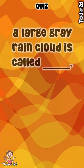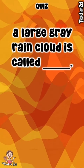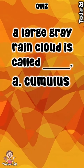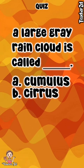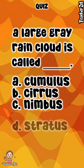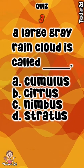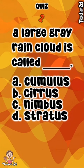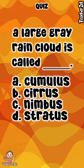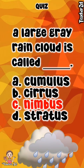A large gray rain cloud is called blank. A. Cumulus. B. Cirrus. C. Nimbus. D. Stratus. The answer is C. Nimbus.